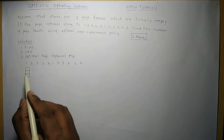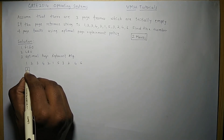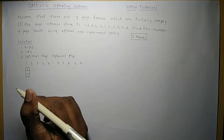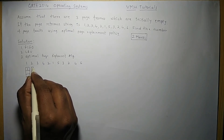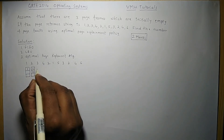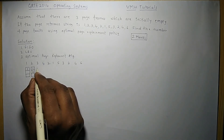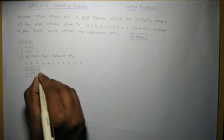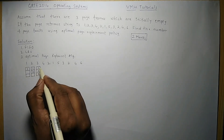Initially all page frames are empty. The CPU requests page 1 — it's not in memory, so a page fault occurs and page 1 is placed in frame 1. Next, page 2 is requested — not available, another page fault, placed in frame 2. Next, page 3 is requested — not available, another page fault, placed in frame 3.